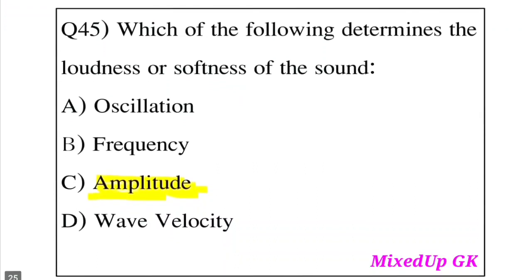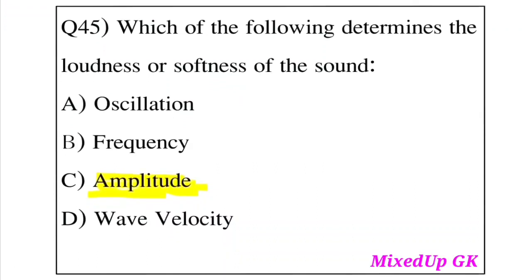Question 45: Which of the following determines the loudness or softness of sound? Option A: Oscillation. Option B: Frequency. Option C: Amplitude. Option D: Wave velocity. The answer is Option C, Amplitude. Amplitude determines the loudness or softness of sound.